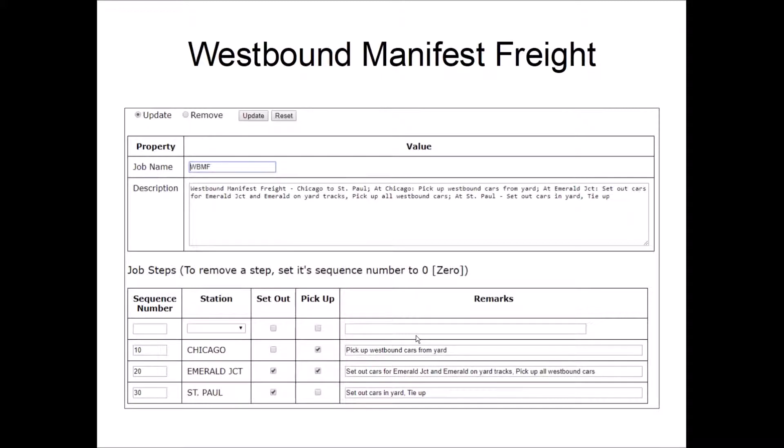So here you can see the job steps for the westbound manifest freight. This is the one from Chicago to St. Paul, again, setting out and picking up at Emerald Junction. And you can see that it's organized the same way that the eastbound manifest freight is.